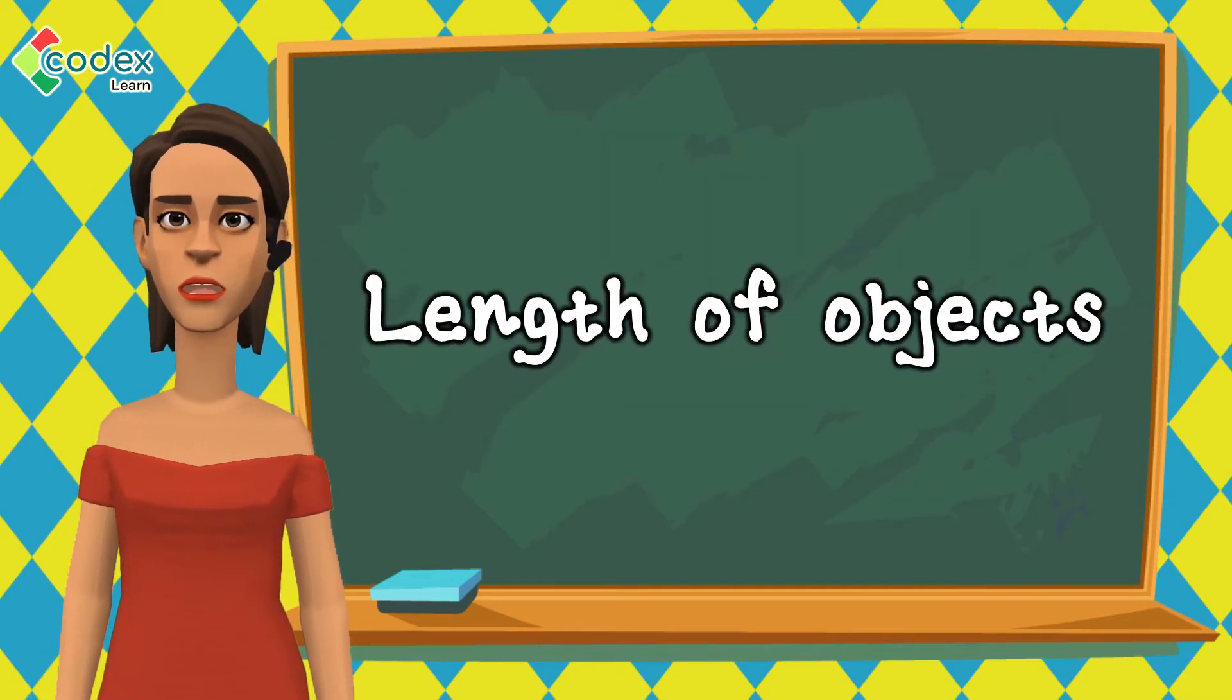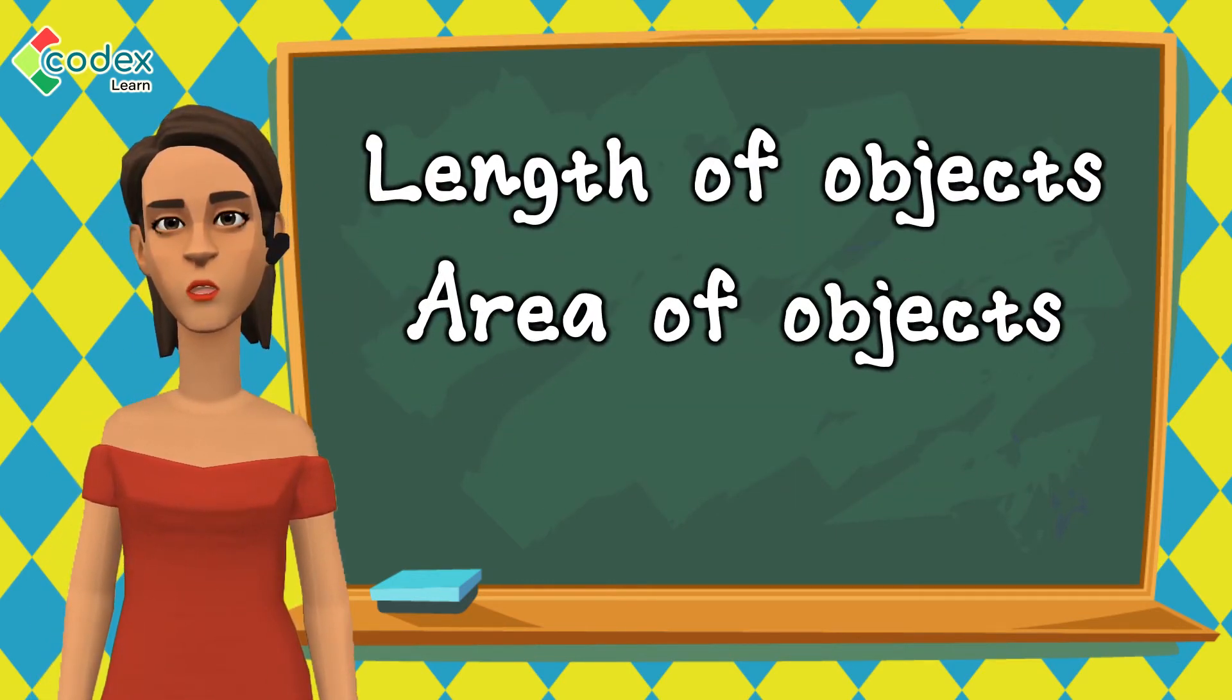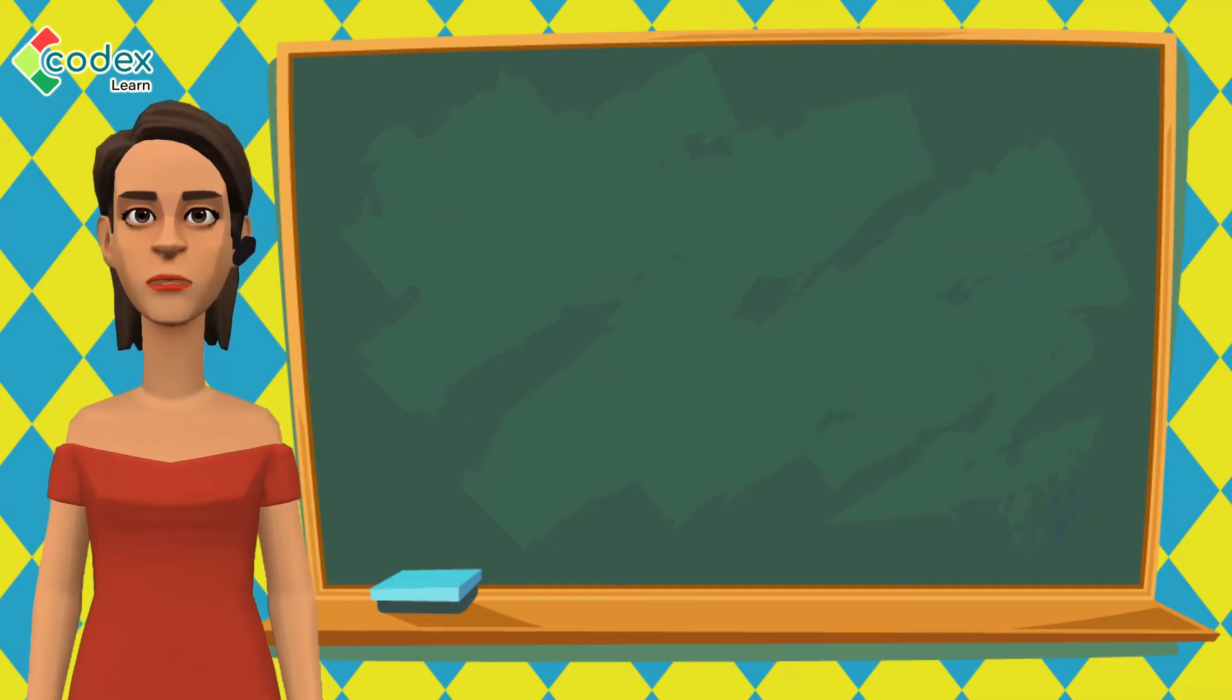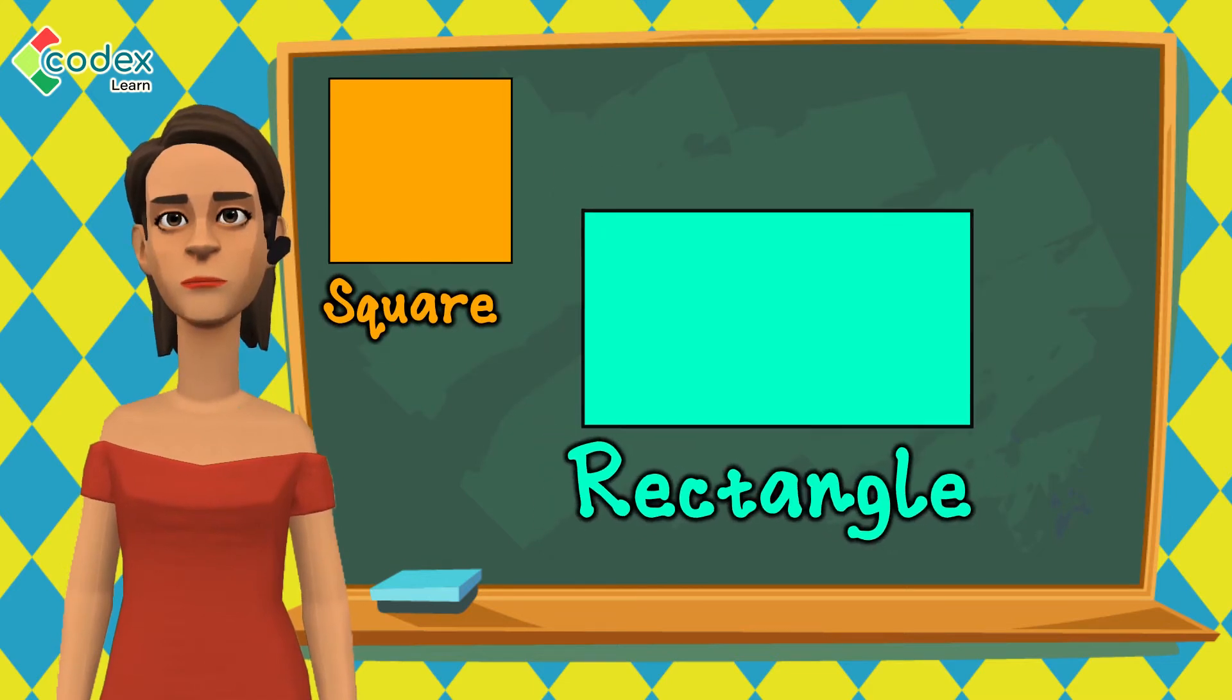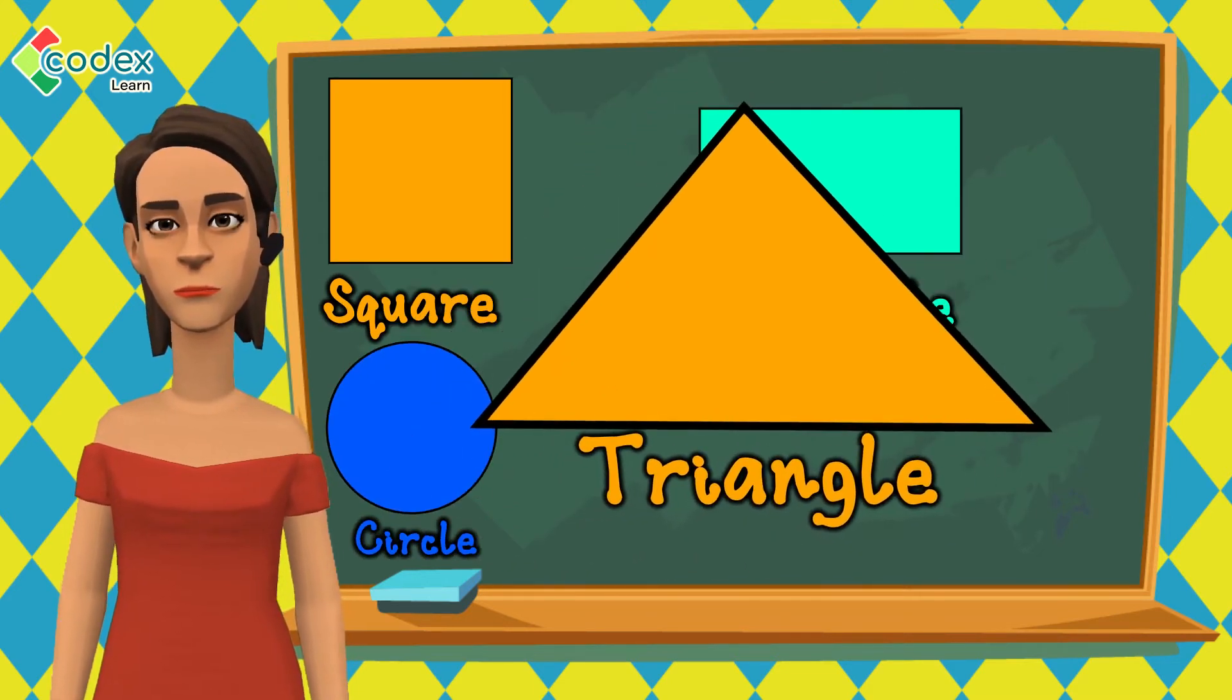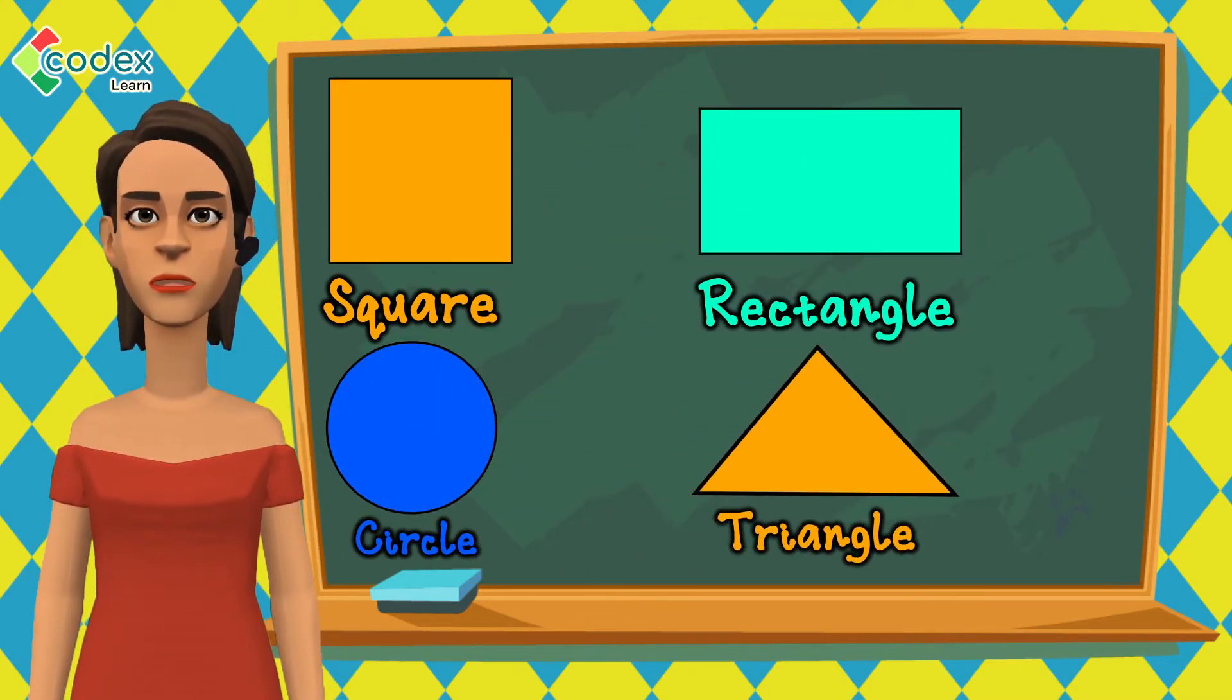Just like finding the length of objects, finding the area of objects is important in helping us make decisions in our everyday lives. Different shapes like a square, a rectangle, a circle, and a triangle have different ways through which we can find their area.